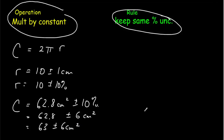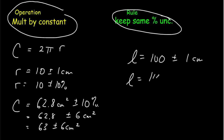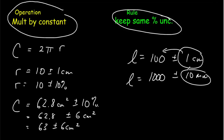Take note: whenever you change units, you're just multiplying by a constant, so you're using this same rule. For instance, if L equals 100 plus or minus 1 centimeters, switching to millimeters gives 1000 plus or minus 10 millimeters. Notice that a unit conversion keeps the same percentage uncertainty — 1 out of 100 is the same as 10 out of 1000, both are 1%. So your most common example of this rule is unit conversion.